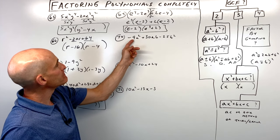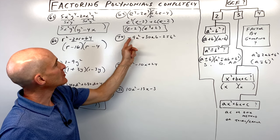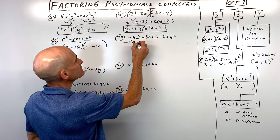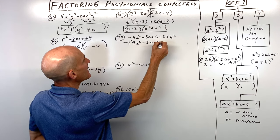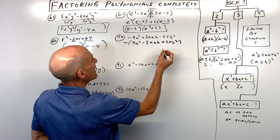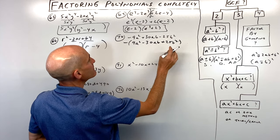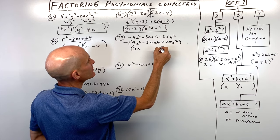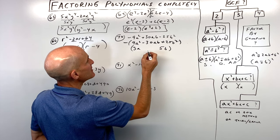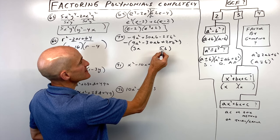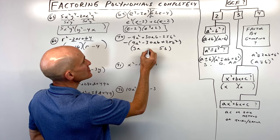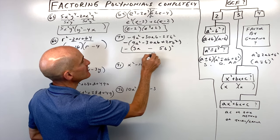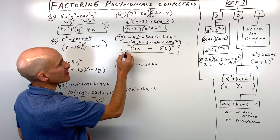Number seventy starts with a negative, which is messy, so factor out a negative 1 first — that flips the signs. Now notice the first term is a perfect square — 3a times 3a — and the last term is a perfect square — 5b times 5b. Check: 3a times 5b is 15ab, doubled is 30ab. So we have a perfect square trinomial, and we bring down that initial negative 1.